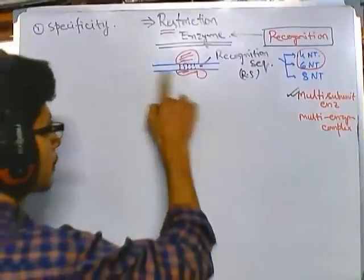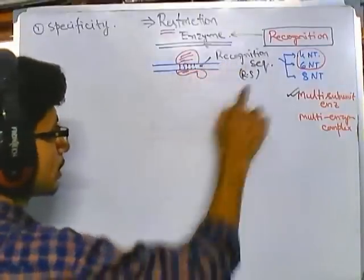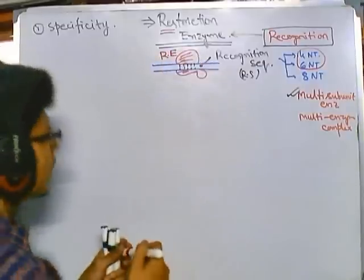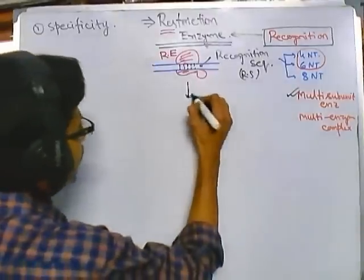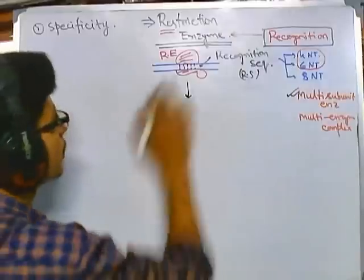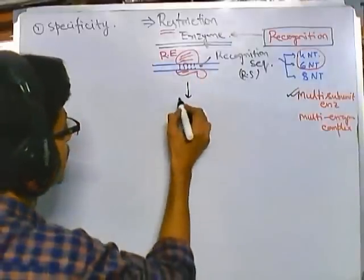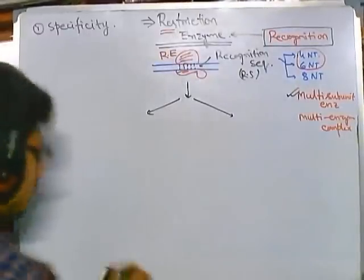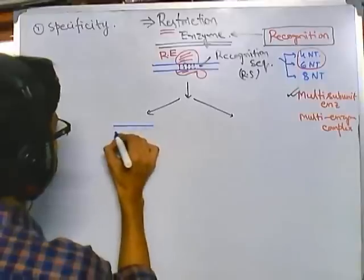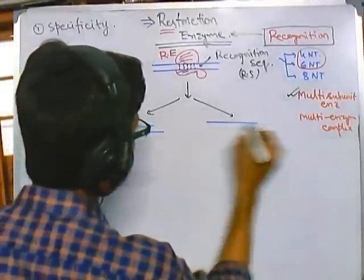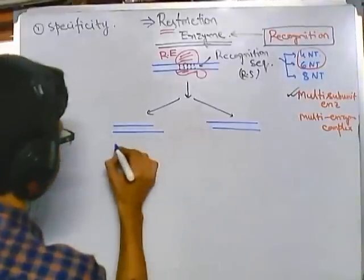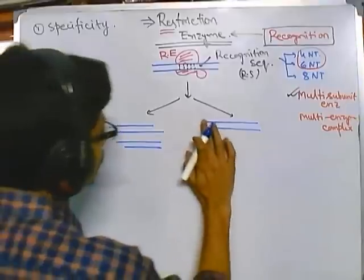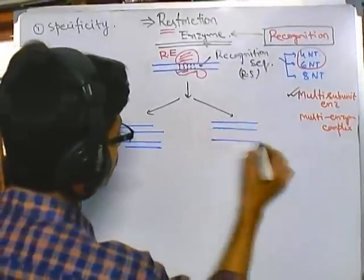After that, suppose this is the DNA sequence. This black region is the recognition sequence or RS, and this red thing is the restriction endonuclease or restriction enzyme. Now it can cleave from this region. This cleavage can be of two different types. One is that after the cleavage it can generate sequences like that, or it can generate sequences like that.